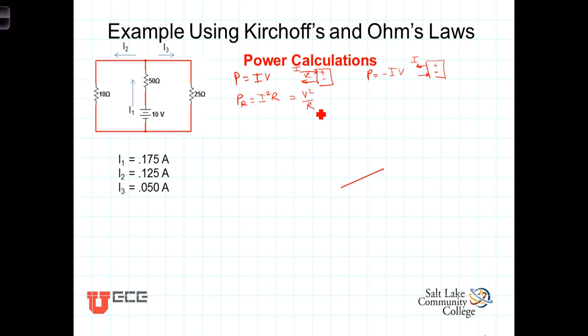These two forms can be deduced from our basic definition of I times V, hereby replacing V with I times R, Ohm's law, and in this form here replacing I with V over R, again combining the power definition or the power defining equation with Ohm's law.